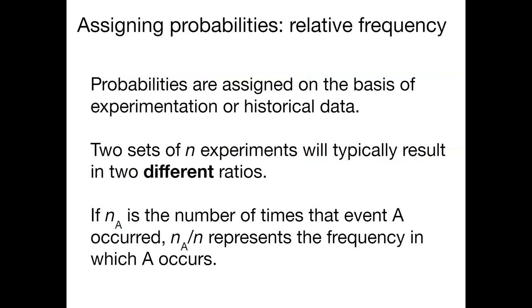You could also use a relative frequency approach. Here it might be harder to think about which outcomes you expect, but we might rely more on historical data, or we might design an experiment to say something about those probabilities. As an example, we might have two sets of n experiments, and these might typically result in two different ratios. If n sub a is the number of times that event a occurred, n sub a divided by n would be the frequency in which a occurs.